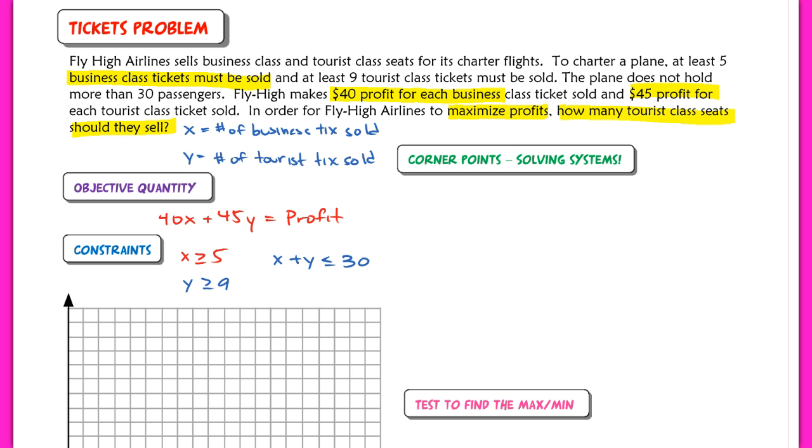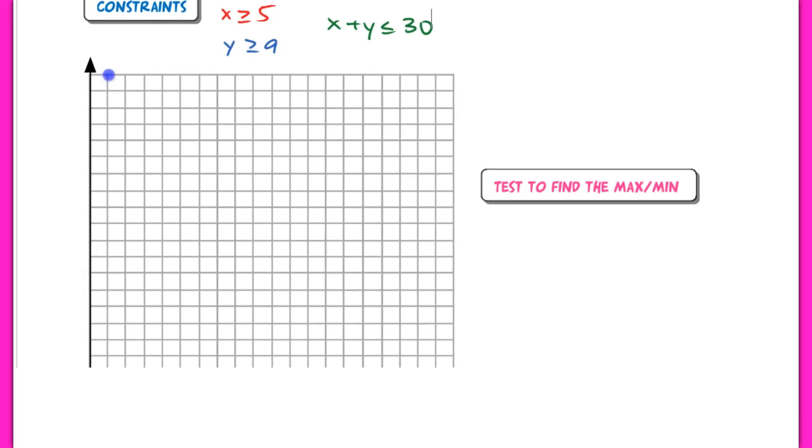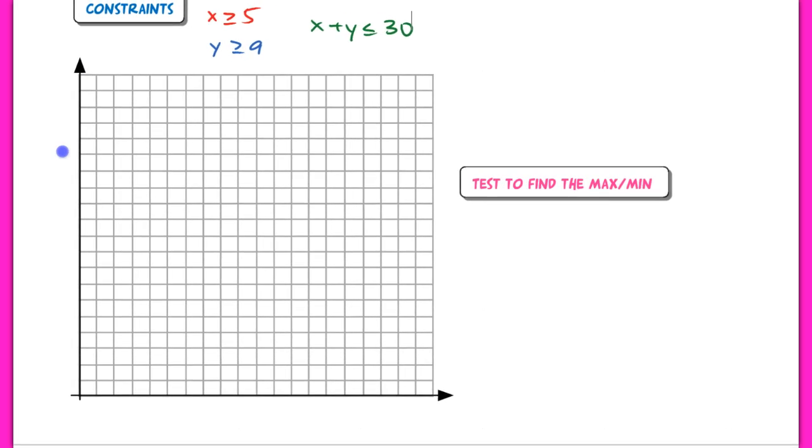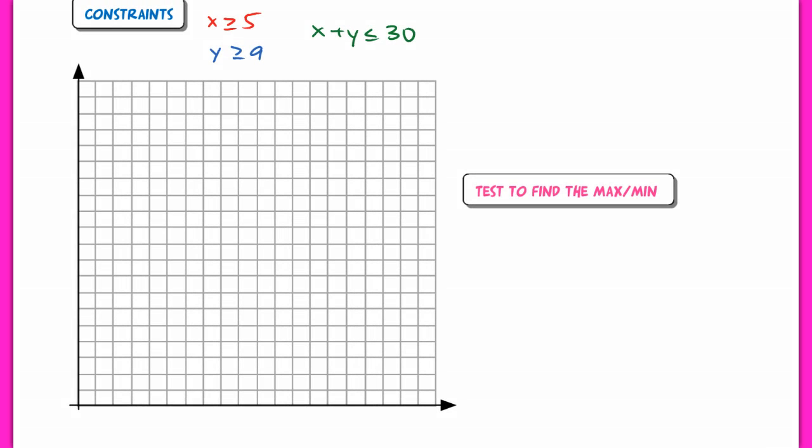I actually want to do this one in green. So we have a different color for each line. So X plus Y should be less than or equal to 30. So now I'm going to go ahead and you can pause and graph this on your own, but I'm going to go ahead and graph this.